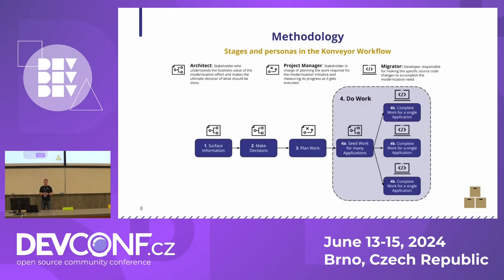As with any process, there are relevant stakeholders. The three most important are: first, the Architect, who makes decisions about what makes sense for the organization — whether modernization brings benefits or just more costs. Second, the Project Manager, who assigns and plans the work. Third, the Migrator, the actual person — a developer or consultant — who changes the application source code and deploys it on the target platform.